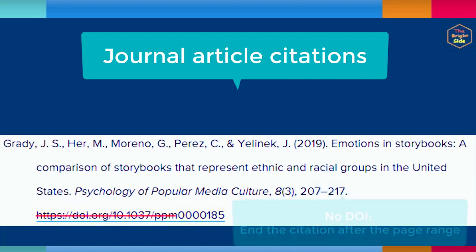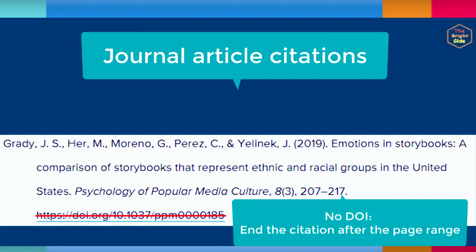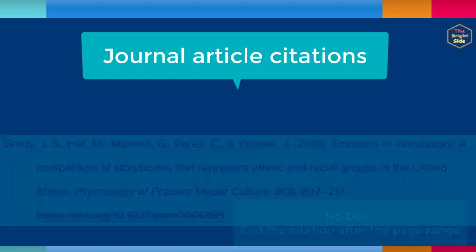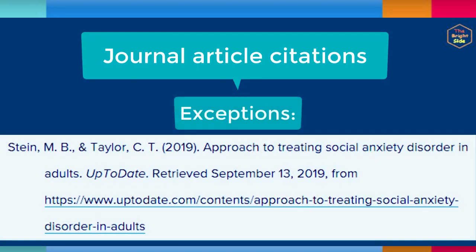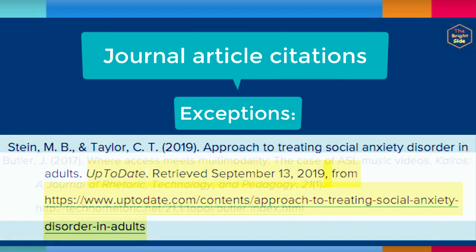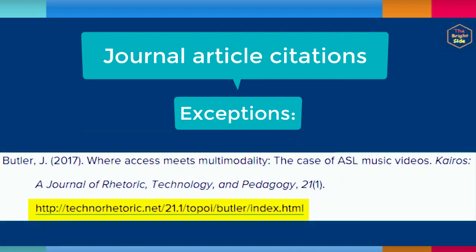If the article has no DOI and is published in a database, don't include a URL or any database information. There are a few exceptions, such as when articles are only accessible in one particular database — in that case, include the database name in italics, the date you accessed it, and a URL. If the article has no DOI and is published on a website, include the URL.